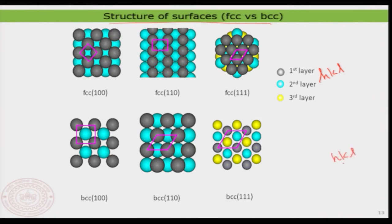When HKL values are bigger — in the order of 551 or 10, 12, 12 and so on — we have seen that those surfaces can actually be more corrugated. So the surface roughness or corrugation is also going to be dependent on the surface Miller indices.